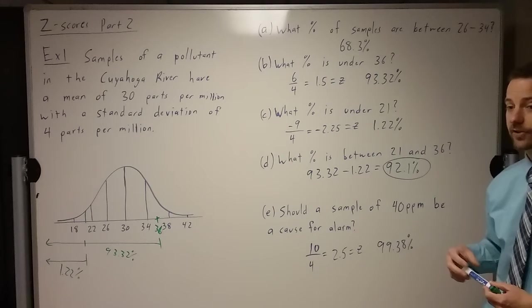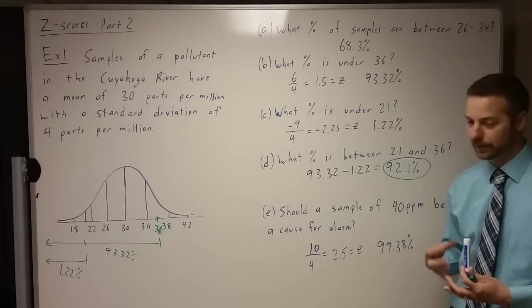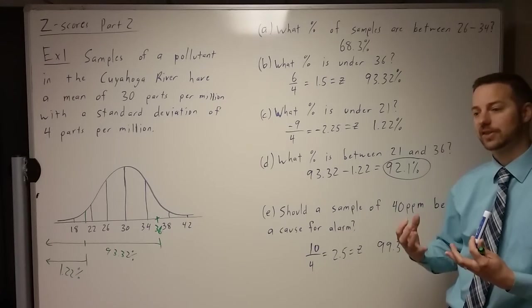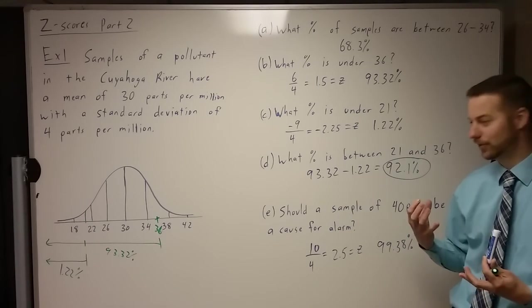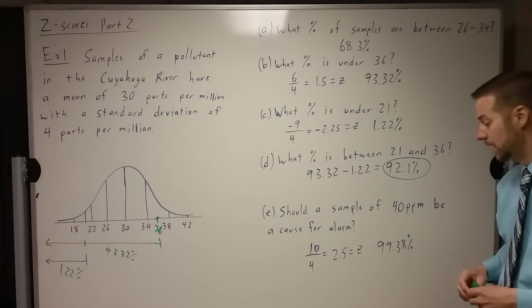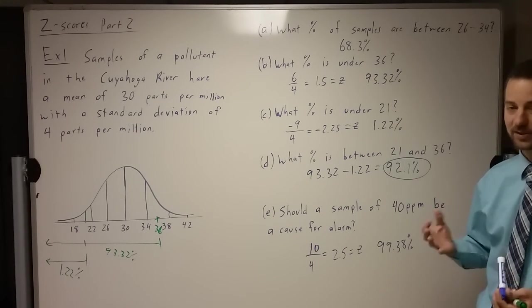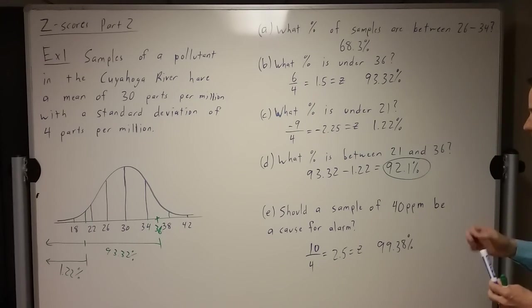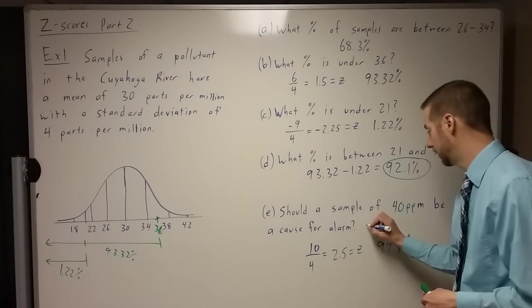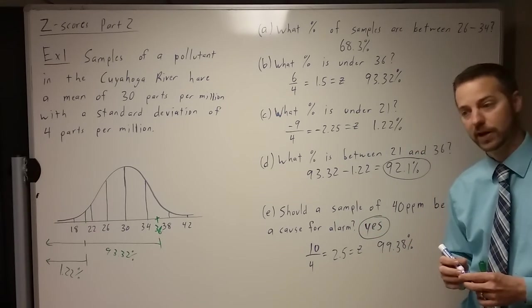A lot of times this is called the p-value in statistics. We're not going to get real far into this. There's a whole thing called hypothesis testing and rejecting the null hypothesis and all that stuff. But basically, this would be significant at a p equals 0.01 level, which means it's significant. There's a less than 1% chance that this happens. So yes, in the end, this probably should be a cause for alarm in this situation.